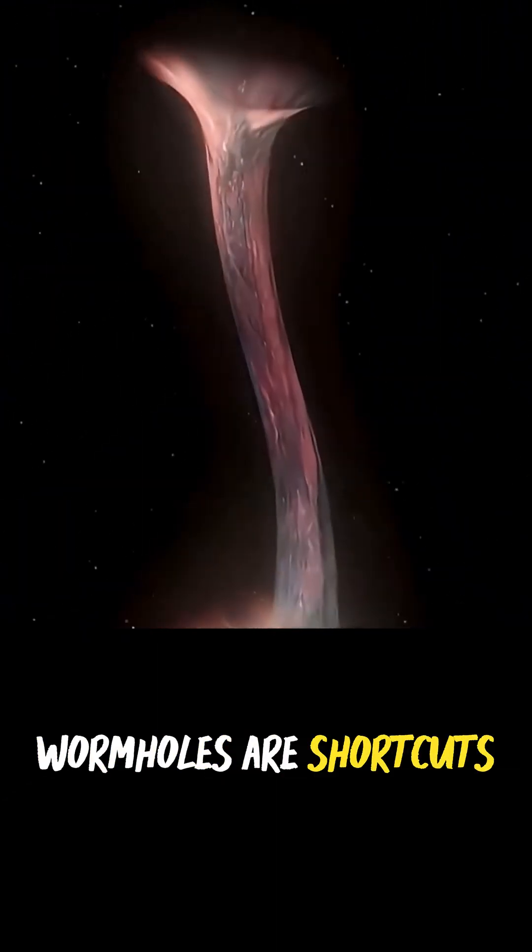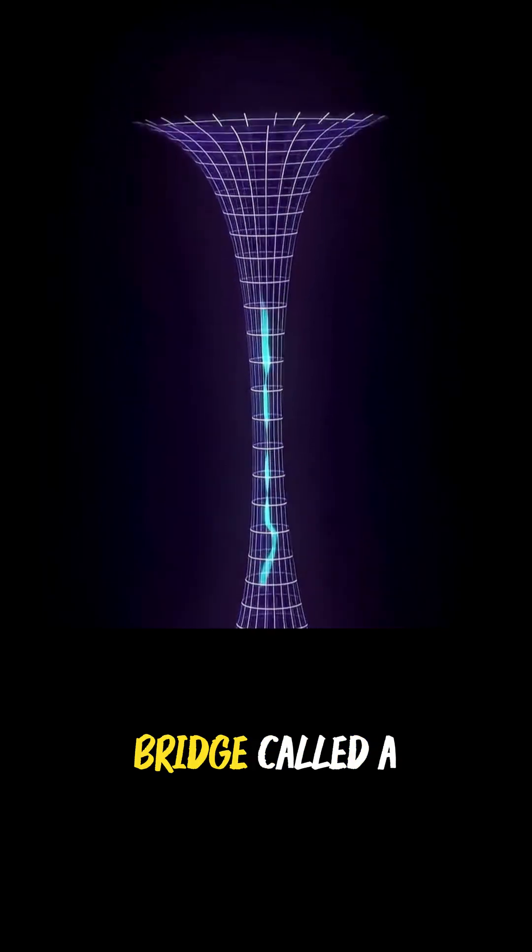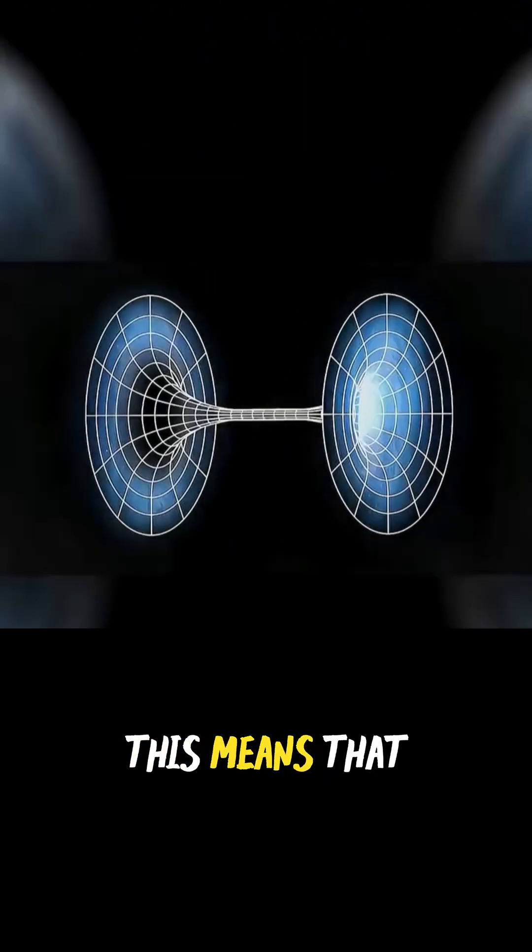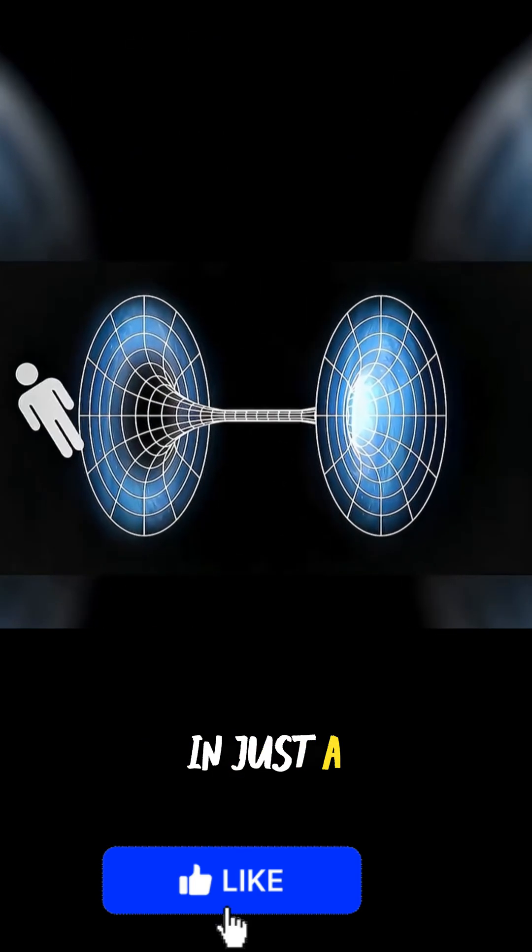Wormholes are shortcuts through space-time between two places, connected by a bridge called a throat, which has an entry and an exit. This means that we can travel from one place to another in space in just a few hours.